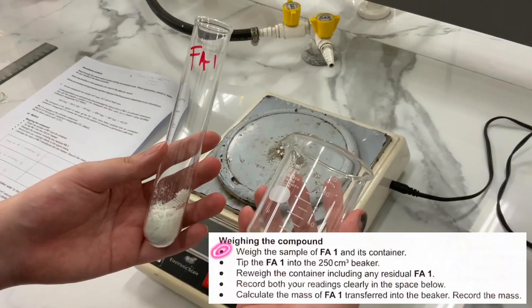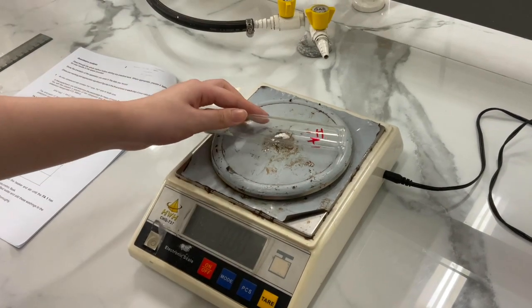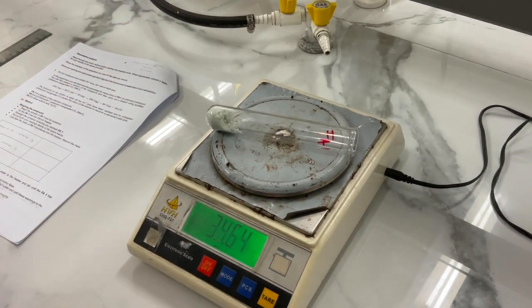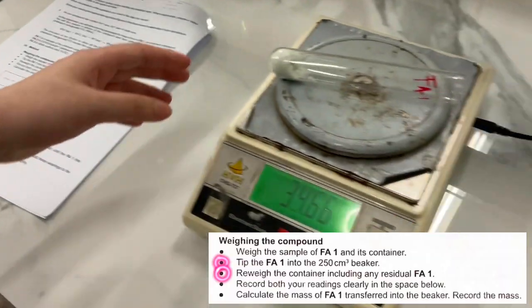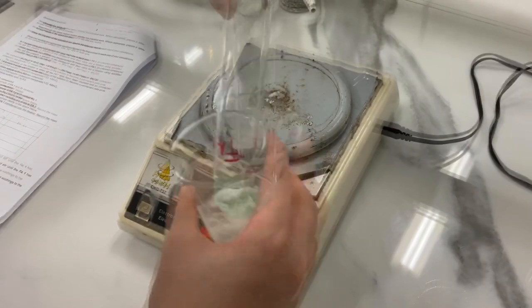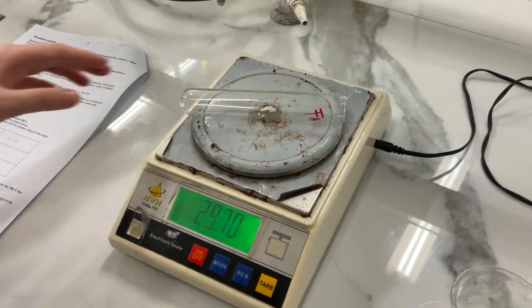The first step is to weigh the sample of FA1 and its container. Don't forget to tare the weighing scale and wait a few seconds for the balance to stop wavering before you record the mass. Then, tip the FA1 into the 250 cm³ beaker, re-weigh the container including any residual FA1, and record its mass.